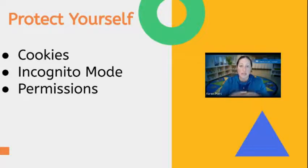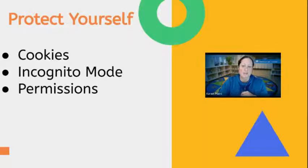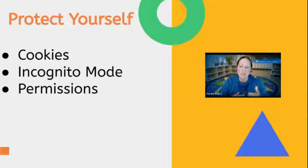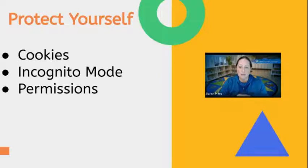To protect your own data as an adult, you can regularly clear out cookies, or use a private browsing mode like Chrome's incognito mode, which restricts the collection of personal information. Learners should also be cautious about granting unnecessary permissions to apps — like requests for location data or access to all your contacts. Unless it's absolutely necessary for the intended function of the application, we don't want to grant that access. By being vigilant about cookies, tracking, and app permissions, we can take more proactive steps to safeguarding our data.